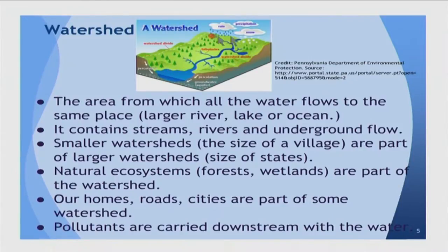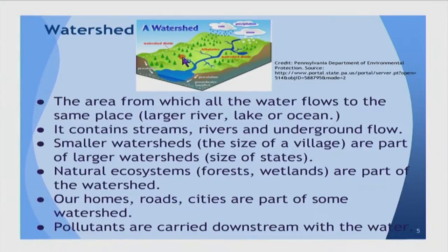The idea of the watershed is that trough-like area where wherever you pour water, it will all converge in the same place. Smaller watersheds are part of larger watersheds, so the watershed of a small tributary is part of the watershed of the major river into which that tributary flows. Some of these watersheds are very large, spanning across states, and even cities are included in them. Since there are cities and roads included in the watershed, there are many sources of pollution, and the water as it flows carries eroded soil, sediments, and pollutants as well.